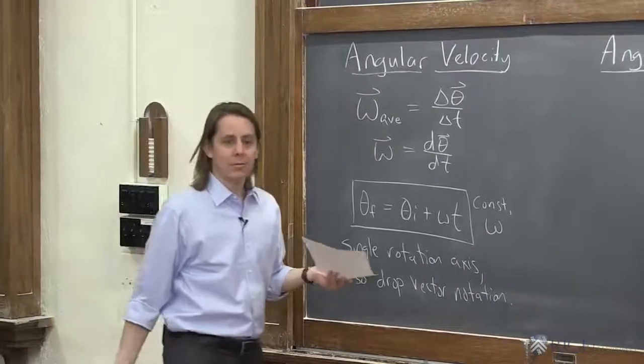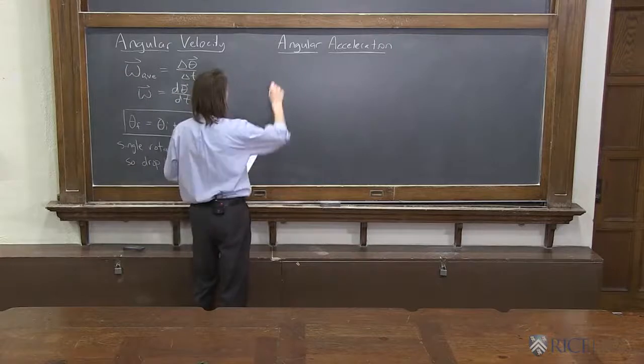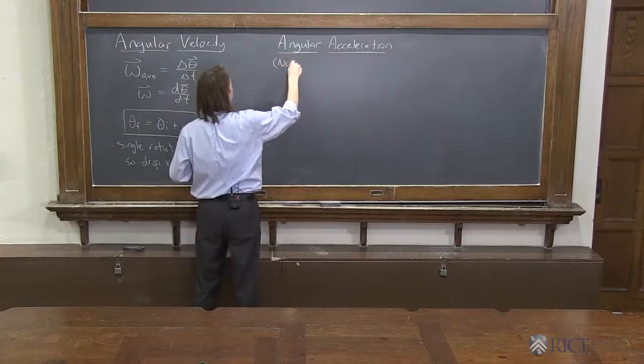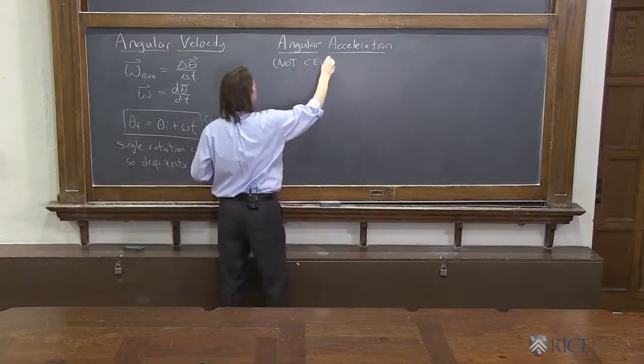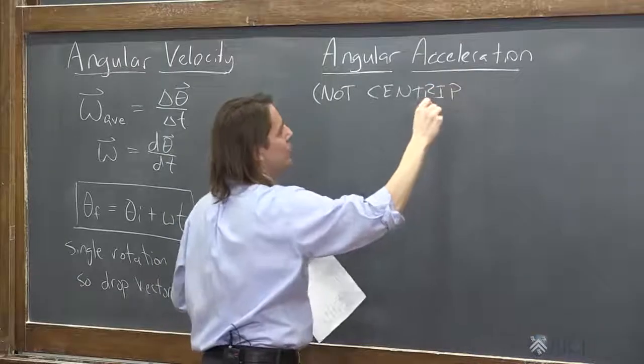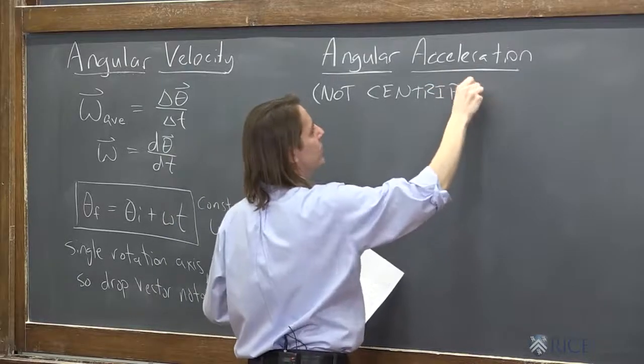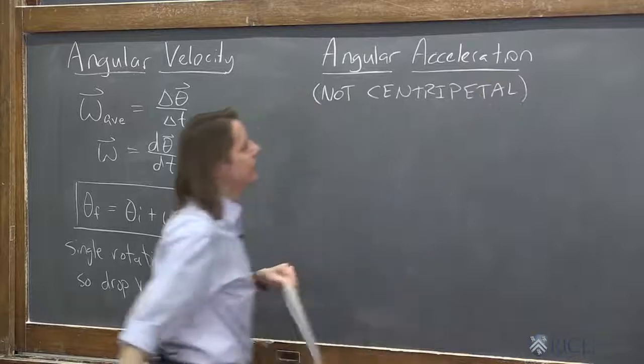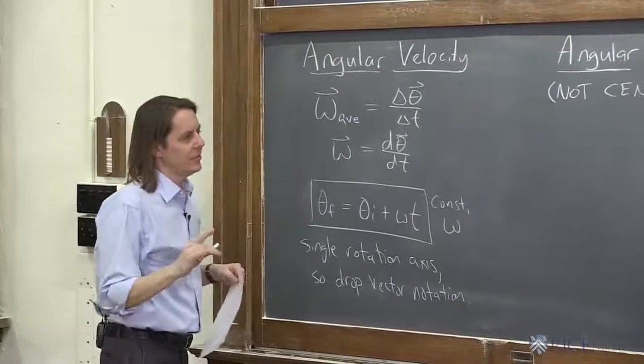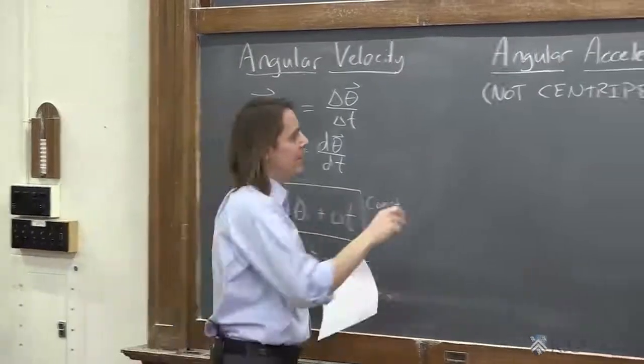Let's look at angular acceleration. What was the definition? And also, I want to point out not the centripetal acceleration. We're not talking about uniform circular motion. That was AC. This is not AC. This is called alpha.